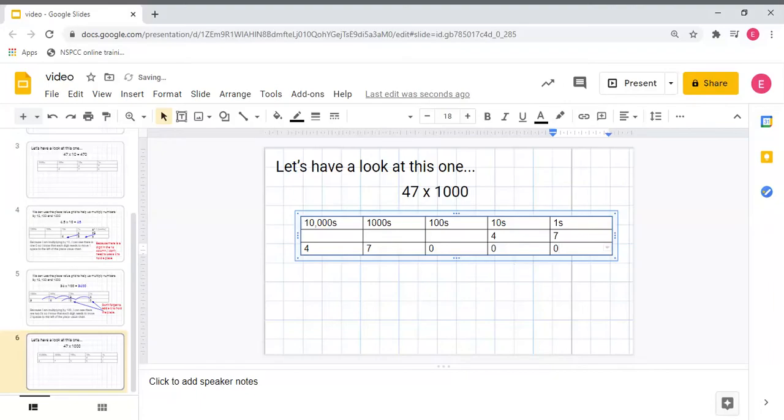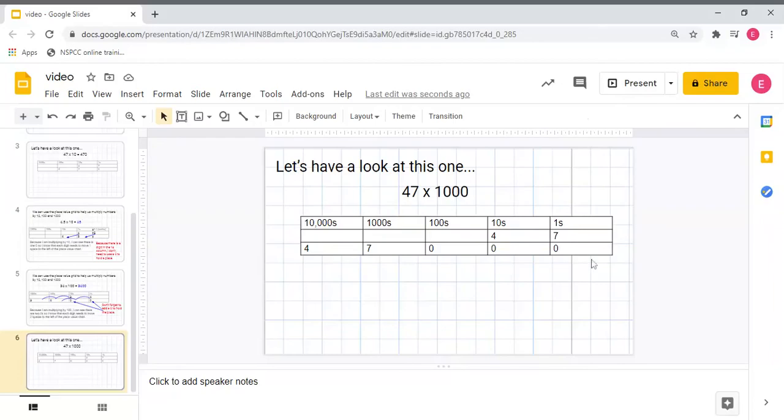So that my thousands and my tens of thousands digits can hold their places. So now my answer is 47,000. Have a go now at the task, looking at times by 10, 100, and 1,000.